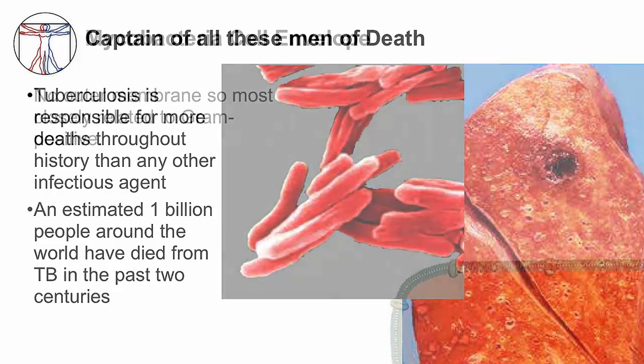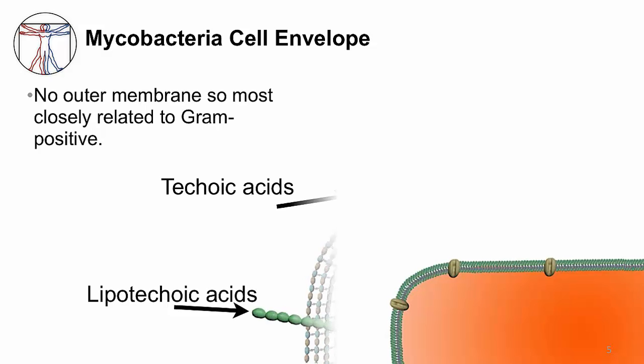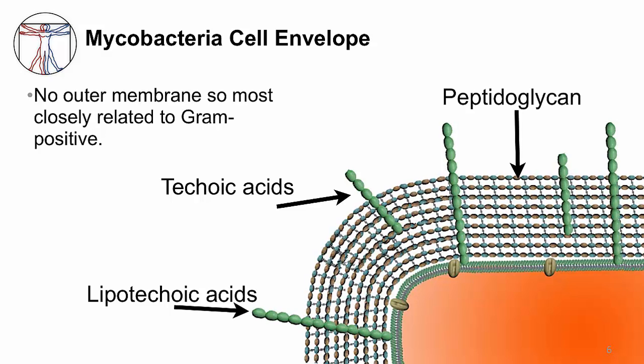The mycobacteria cell envelope has no outer membrane, so it is most closely related to gram-positive bacteria. Remember that bacteria need to protect their contents with multiple layered envelopes. The figure on the slide shows you the cell envelope of a gram-positive bacteria with its thick peptidoglycan layer decorated with teichoic and lipoteichoic acids.